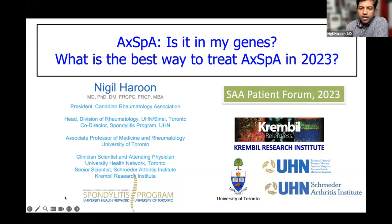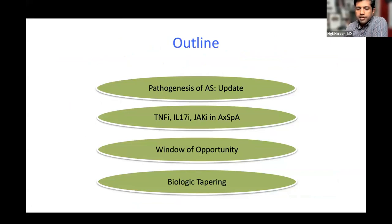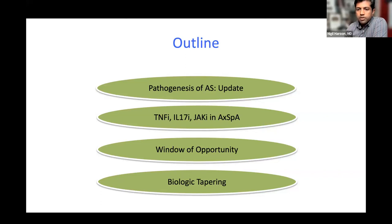Today, my plan is to give you an overview of the pathogenesis of axial SpA and a brief update. The slides may look busy, but I'll take you through them in a simple and easy-to-understand way. After the section on pathogenesis, we'll move to treatment — specifically the currently available treatment options approved for axial SpA, the important concept of the window of opportunity, and biologic tapering, which is being discussed more and more.